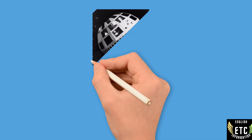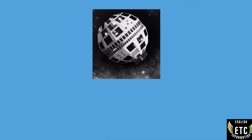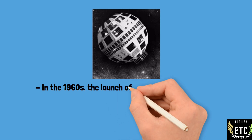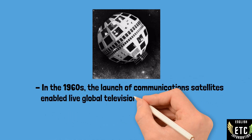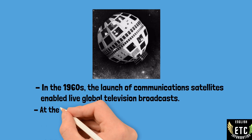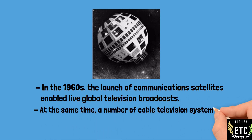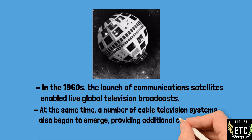There was significant development of satellite and cable television in the 1960s. The launch of communication satellites enabled live global television broadcasts. At the same time, cable television systems also began to emerge, providing additional channels and improving signal quality.